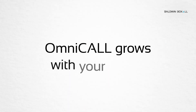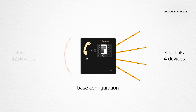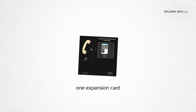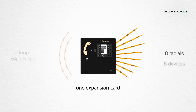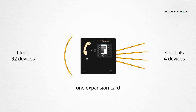OmniCall grows with your needs. Start with one loop or four radials. Adding an expansion card gives you two loops or eight radials, or one loop and four radials.